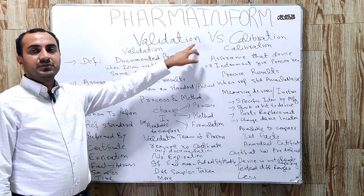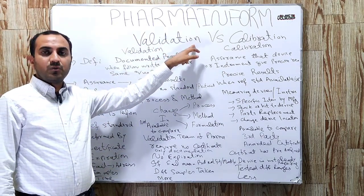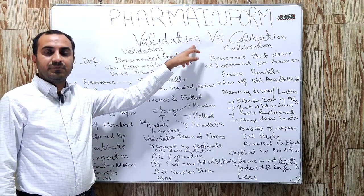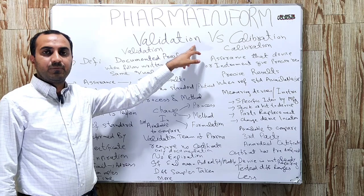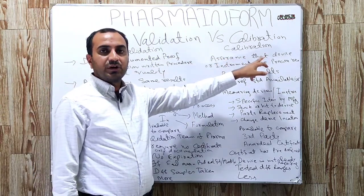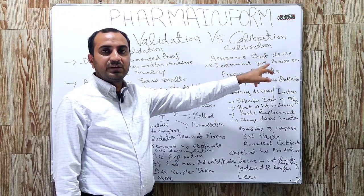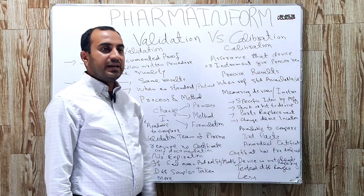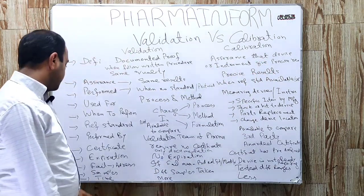Regarding time: validation is a long activity and takes more time. Calibration is a short activity and takes less time.